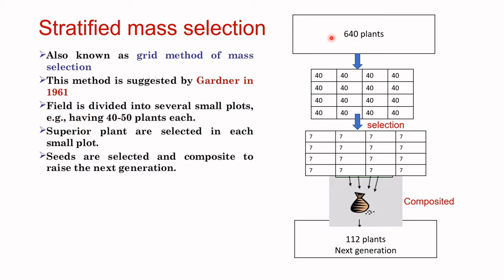In the stratified mass selection method, a base population is established and the field plot is divided into several different grids or blocks, each containing 40 to 50 plants. For example, 640 plants are divided into 16 different plots of 40 plants each. From each block, a few superior lines are selected — say 7 out of 40 — and from those selected plants, seeds are composited and grown in the next generation. This is called the stratified method of mass selection, rather than compositing the whole group by random mating.